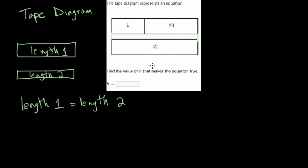This is length 42, and this is length H and 26 combined together. Whenever you're combining like this, we're essentially adding them. So we can say that the length of one, which is H and 26 or H plus 26, is equal to the length of the other one, which is 42. We want to solve this equation.